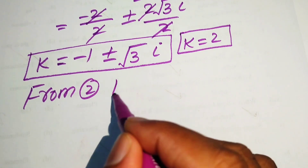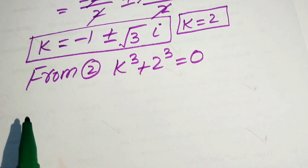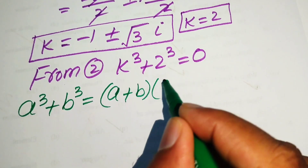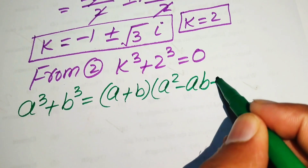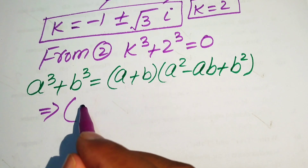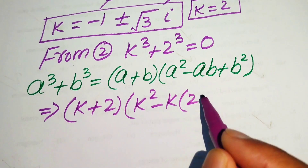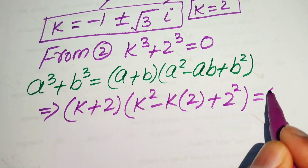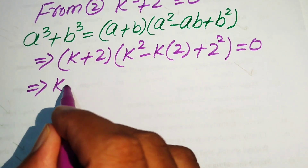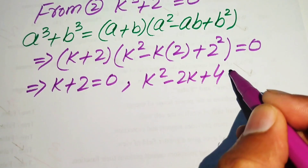Now to find the remaining roots we solve equation number 2: k cubed plus 2 cubed equals 0. We apply the sum of cubes formula: a cubed plus b cubed equals a plus b, times a squared minus ab plus b squared. With a = k and b = 2, this becomes k plus 2, times k squared minus 2k plus 4, equals 0. This gives us two cases: k plus 2 equals 0, and k squared minus 2k plus 4 equals 0.